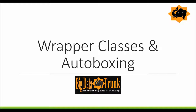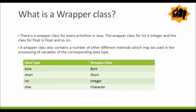Now let's talk about wrapper classes and autoboxing in Java. Wrapper classes provide a mechanism to wrap primitive values in an object. There will be a wrapper class for every primitive in Java — for int it is Integer, for float it is Float, and so on. Wrapper classes have mostly the same name as primitive types but with a capital letter.